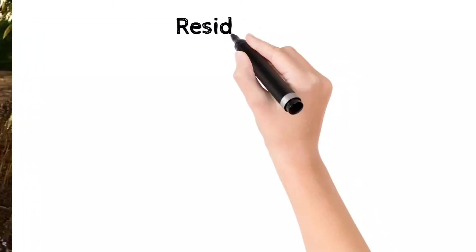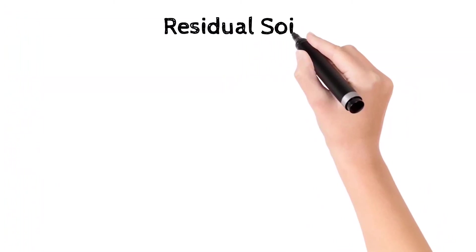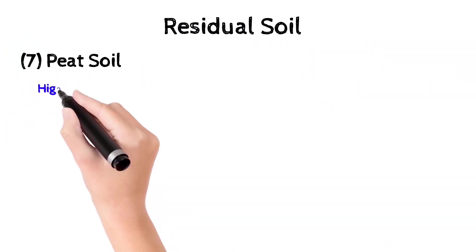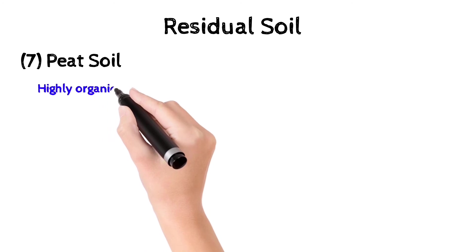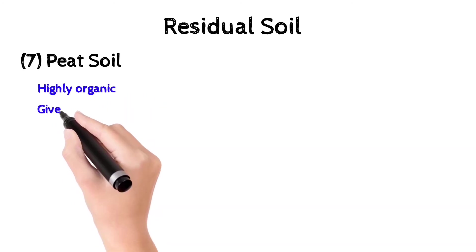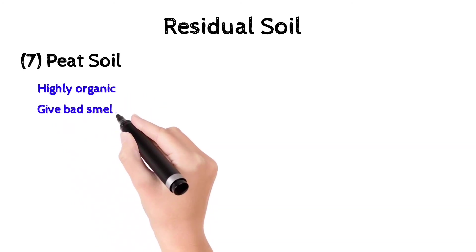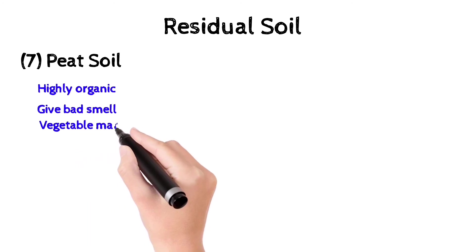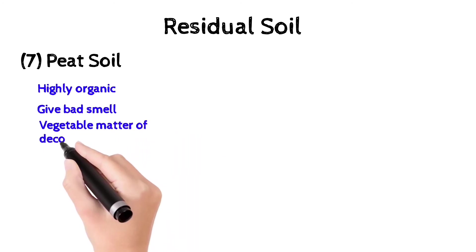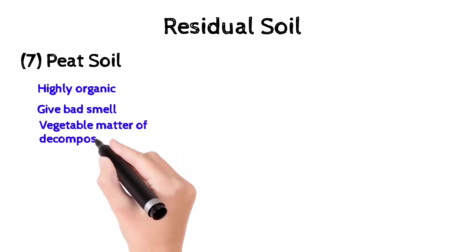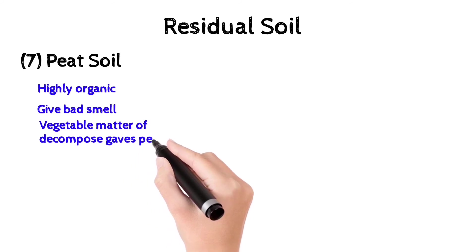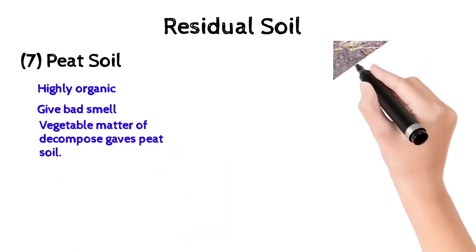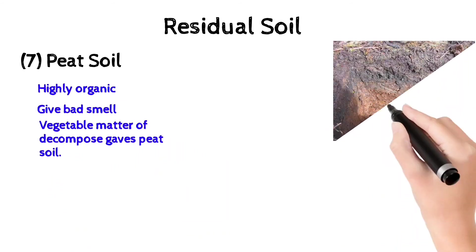The seventh classification of residual soil is peat soil. It is highly organic — vegetable matter that has decomposed gives peat soil. It also gives off a bad smell.